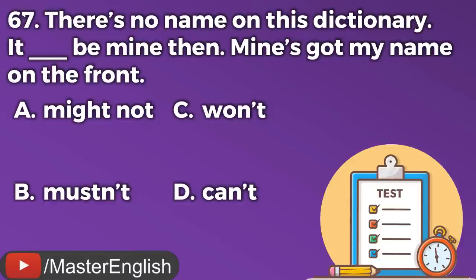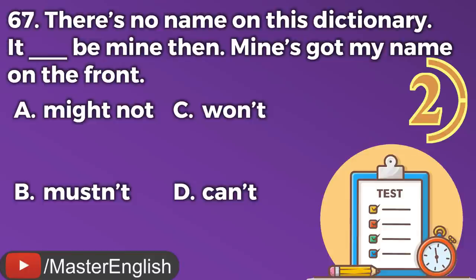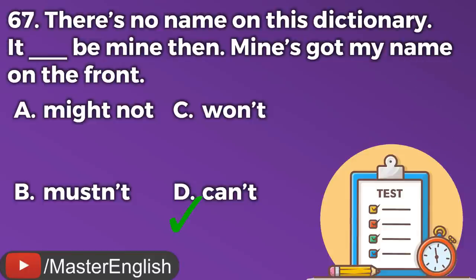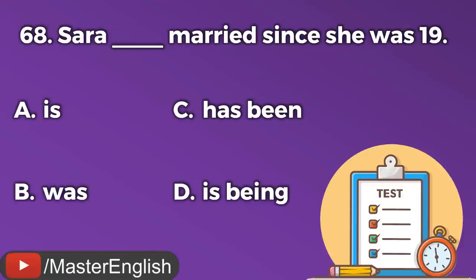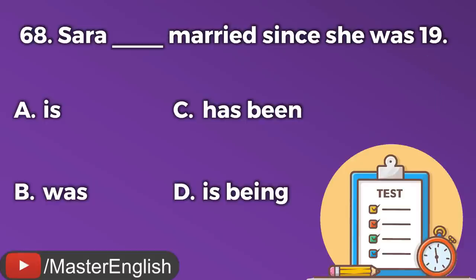Question number sixty-seven. There's no name on this dictionary. It ___ be mine then — mine's got my name on the front. A: Might not. B: Mustn't. C: Want. D: Can't. The correct answer is D: Can't. It can't be mine then. Question number sixty-eight. Sarah ___ married since she was 19. A: Is. B: Was. C: Has been. D: Is being. The correct answer is C: Has been. Sarah has been married since she was 19.